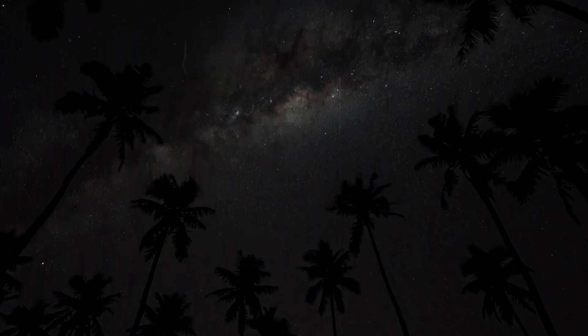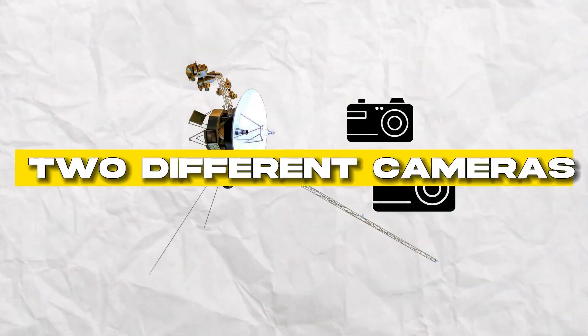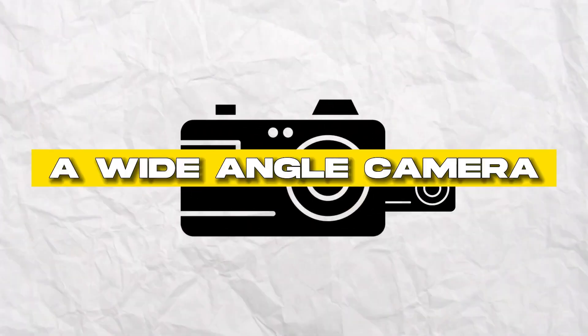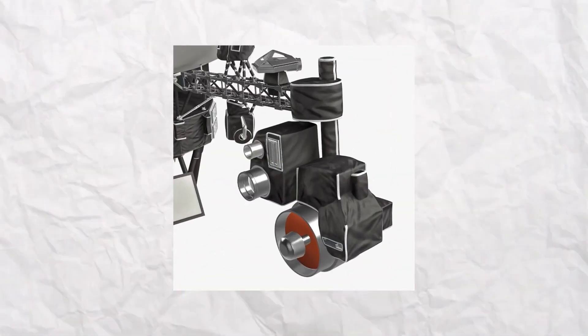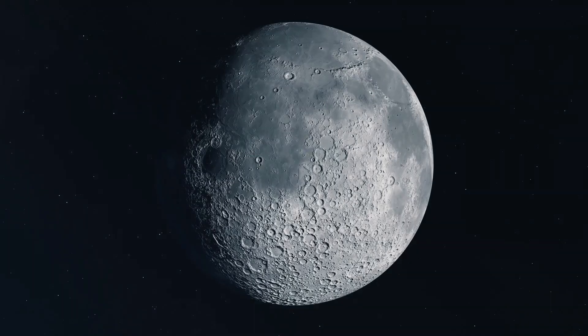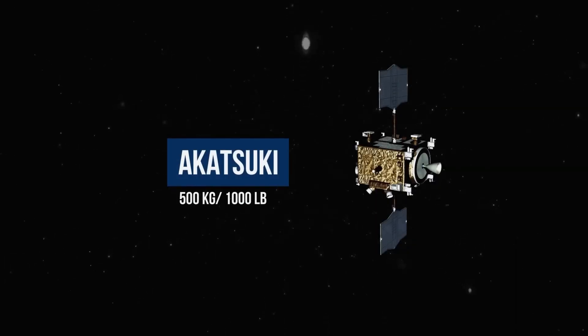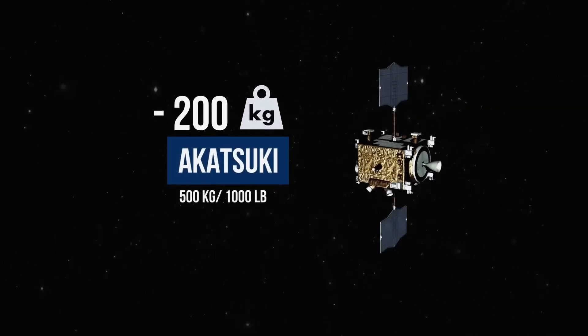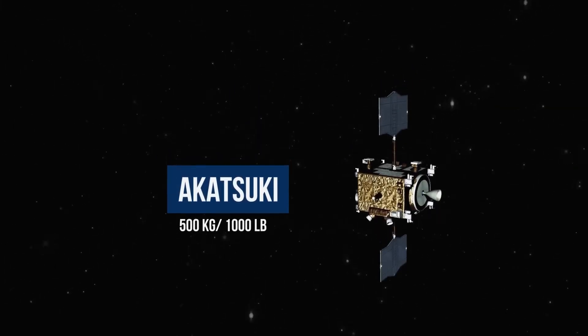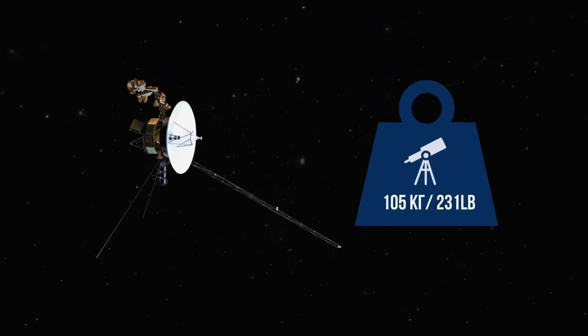Scientists are struggling to understand the nature of the problem. The scientist's task is complicated by the fact that the probe is very far away. Voyager 1 signals take twenty and a half hours to reach Earth, and exchanging messages between the space agency and the probe takes two days. Back in the day, thousands of employees worked on the Voyager mission, but today there are no more than twenty people working part-time.